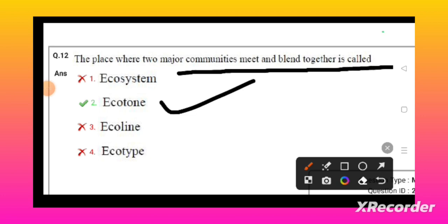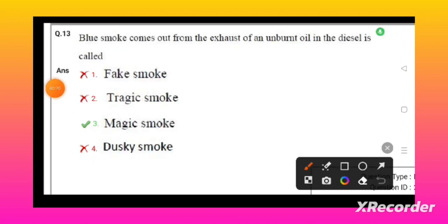is called as ecotone. The blue smoke that comes out of the exhaust gas of unburnt oil or diesel is called dusky smoke.